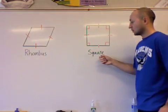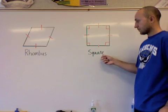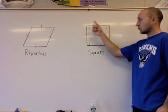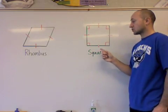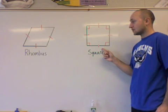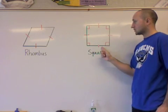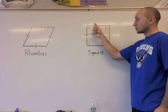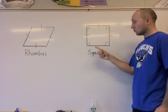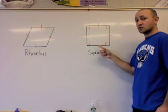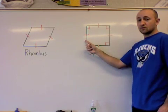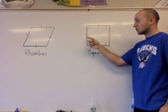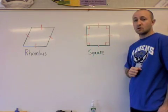Now let's look at a square. A square, much like a rectangle, has four right angles. What makes a square a little bit different from a rectangle is that all of the sides are the same length, designated by these red lines here. So the top line is not only the same length as the bottom, but also the same length as the right and the left. What separates a square from a rectangle is that all of the sides are the same length.